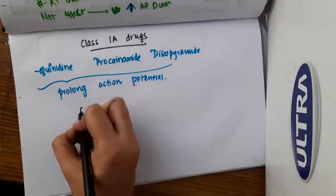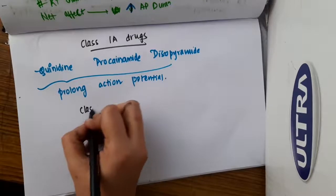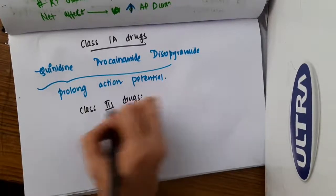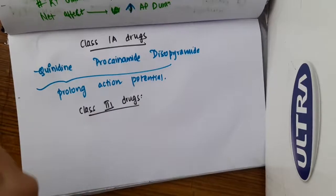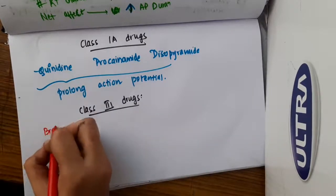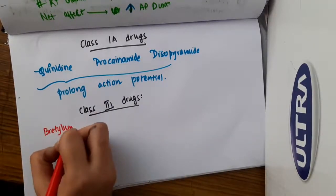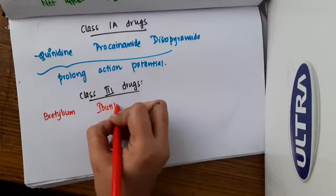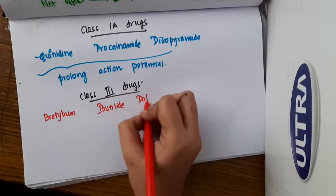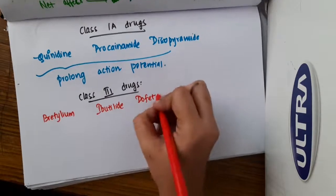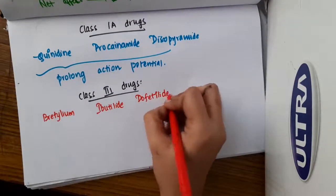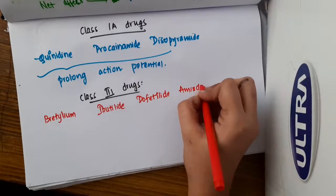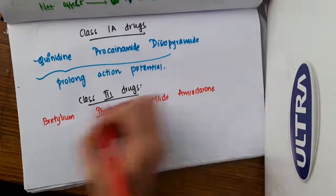So friends, let us now learn some important points about the Class 3 drugs. So what are the Class 3 drugs? Class 3 drugs include Bretylium, Ibutilide, Dofetilide, Amiodarone, and Sotalol.